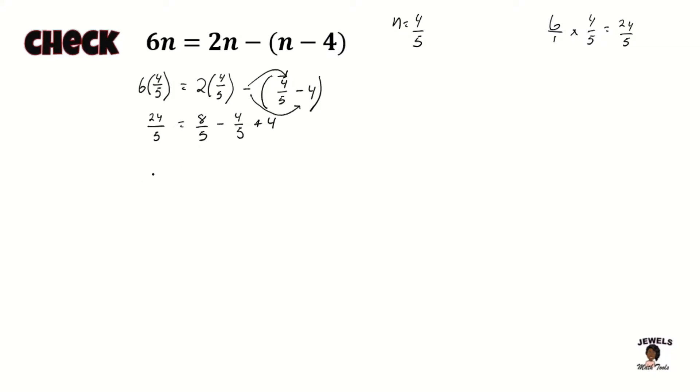So now to simplify, what we're going to do is find our LCD. So we are finding our LCD. And we know that the LCD for all 4 of these terms is going to be 5. So everything that has a denominator of 5, we're just going to put that back. So 24 fifths already has a denominator of 5. So we return our 24.